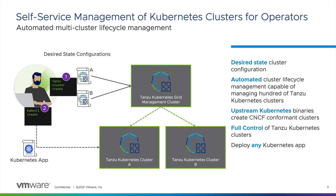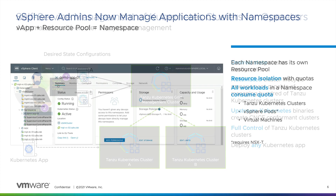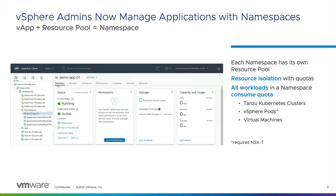vSphere with Tanzu provides more benefits that go beyond capabilities for a Kubernetes operator, but extend to the vSphere administrator. It provides workload segregation through vSphere namespaces, which is sort of like a special resource pool. A vSphere namespace allows a vSphere administrator to limit the types of virtual machine images available to Kubernetes operators when building clusters. It also provides role-based access control with native integration with vSphere single sign-on, and a vSphere administrator can set resource limits on how much CPU, memory, and storage can be consumed from the namespace, making sure there is no cluster sprawl.